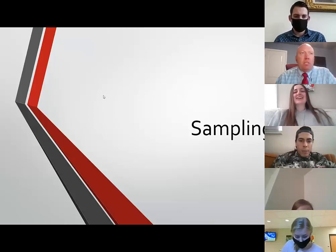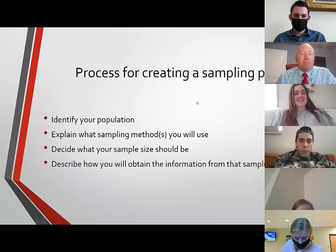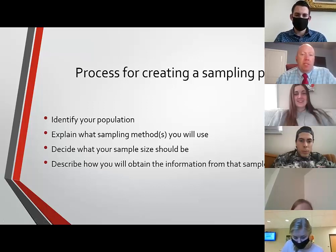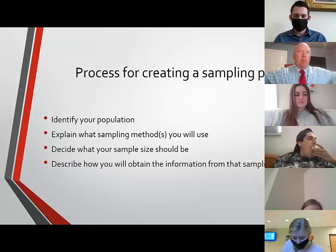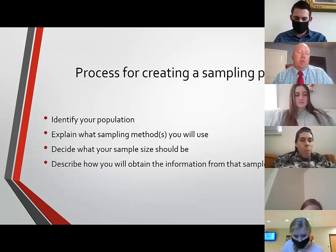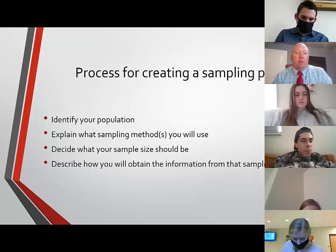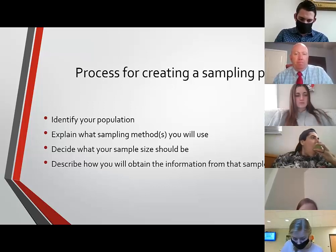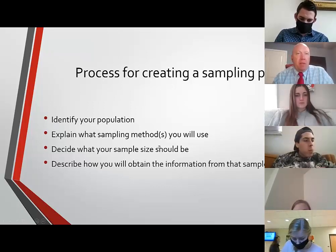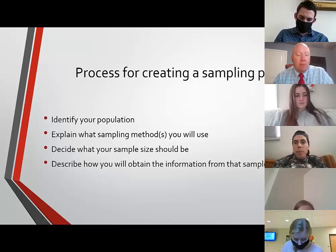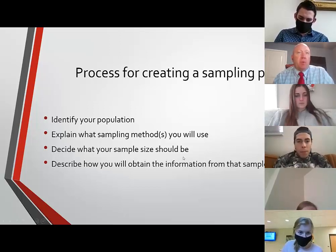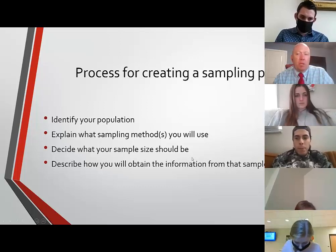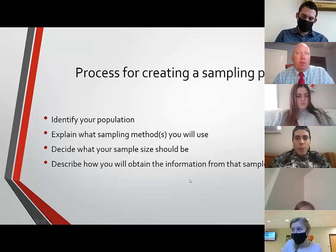We're going to talk about how sampling plans are developed and there are four steps. The first is you identify your population — which target population do you need to understand and are you trying to get information for? We need to explain the sampling method, why we use that method, describe what your sample size should be and what that sample would look like, and then describe how you'll obtain the information from that sample.